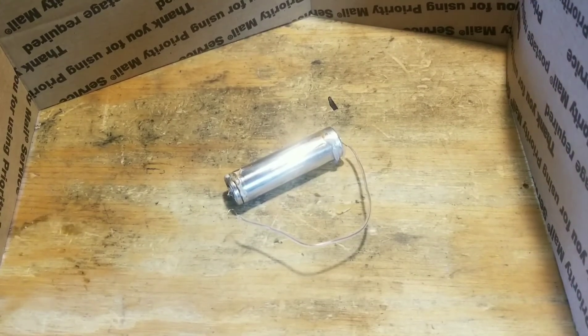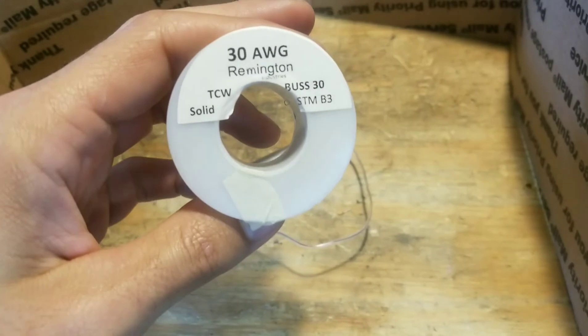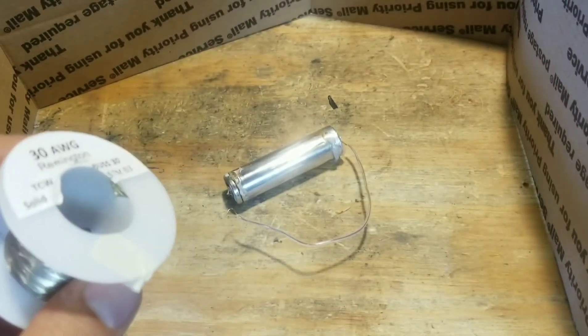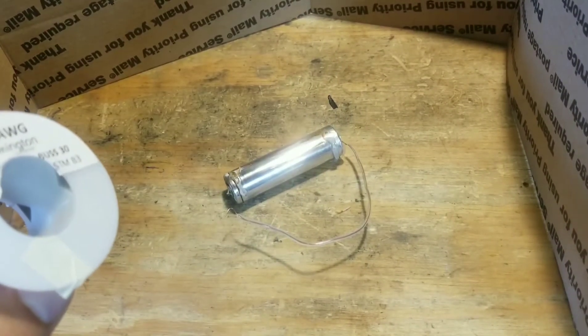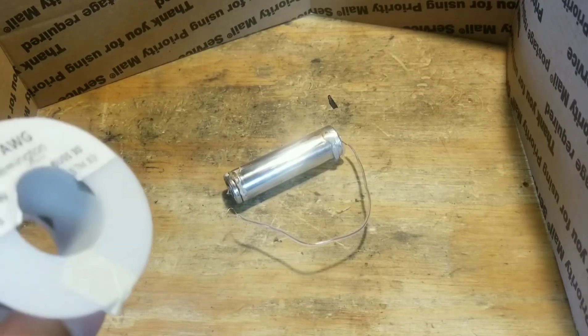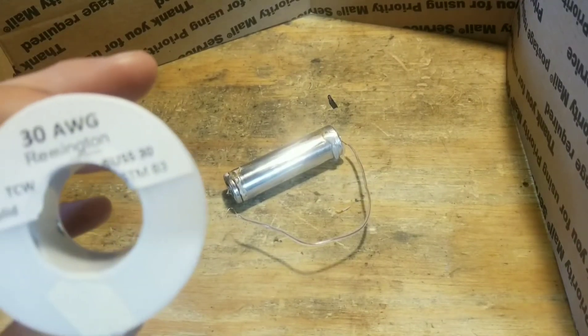So if you want to do the same thing you can get this 30 AWG tinned copper wire and I'm double stranding it. So it's double the diameter, double the surface area of copper conductor.